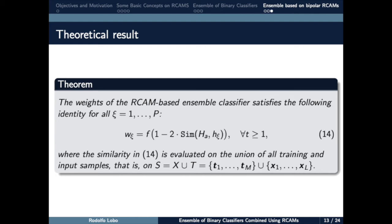In this sense, we obtain the following results. The weights of the RCAM base ensemble classifier satisfies the equation 14, where the similarity is evaluated on the union of all training and input samples. This theorem shows that the RCAM base ensemble classifier is a majority voting classifier whose weights depend on the similarity between the base classifier and the ensemble itself.